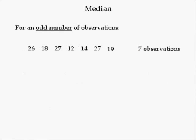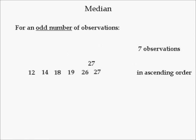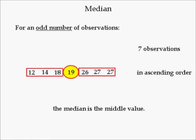To compute the median for an odd number of observations — say 7 — put the data in ascending order and pick the middle number. In this case, the median is 19. Four observations, or 57% of the observations, are less than or equal to 19. Similarly, four observations or 57% are greater than or equal to 19. For odd sample sizes, these percentages get closer to 50% as sample size increases.